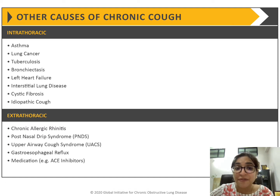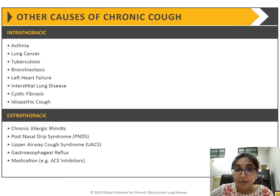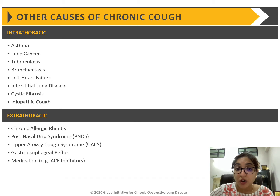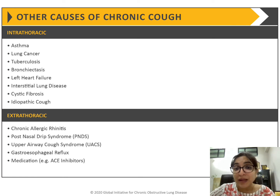The GOLD guidelines also address differential diagnoses. Asthma is a strong differential, along with other chronic lung diseases like lung cancer, TB, bronchiectasis, heart failure, ILDs, and other idiopathic causes. There are also extra-thoracic causes of chronic cough arising from the upper airway, including gastroesophageal reflux disease, post-nasal drip, chronic airway allergies, and medications. Whenever a patient presents with chronic cough, these should be asked about.